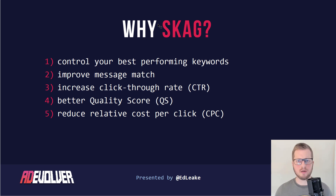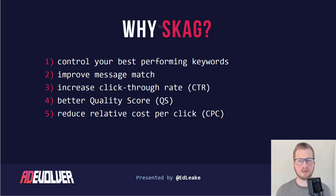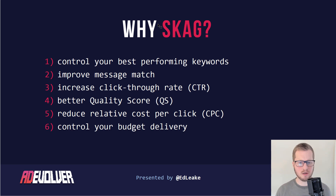Click through rate is a major part of quality score and that in turn lifts your ad rank. Quality score combined with your bid is your ad rank, and it should reduce your cost per click over time compared to leaving exact match keywords in campaigns all mixed together with other match types.